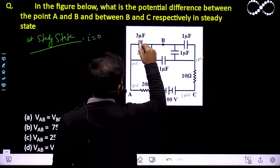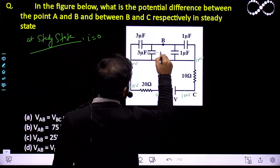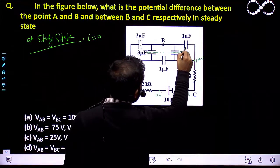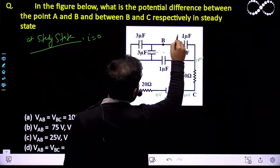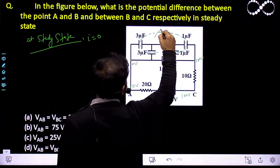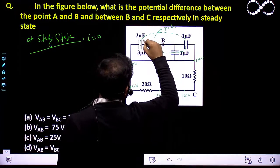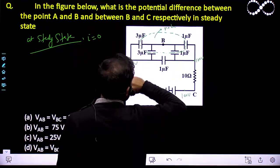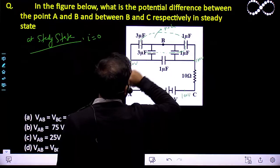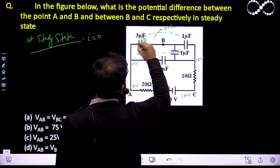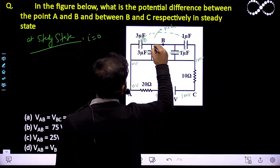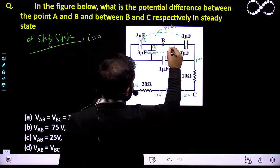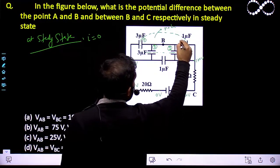Now, if you look here, this is the node — this is a completely isolated part. The total charge on all these plates in this node will be 0. Let us label the plates: I am taking this plate as 1, this as 2, this as 3, and this as plate 4.